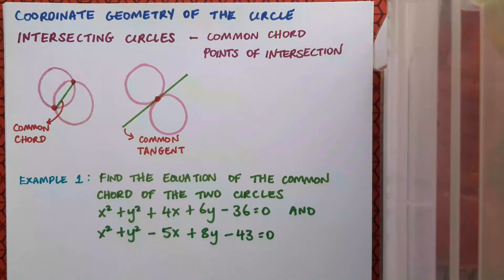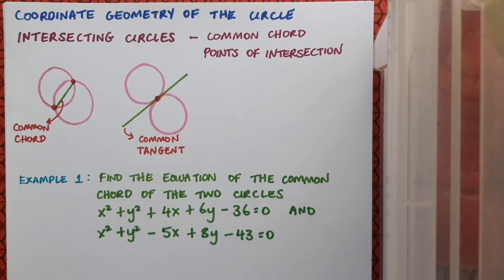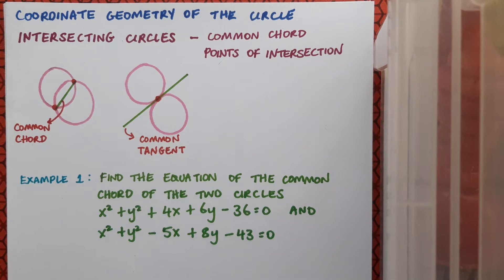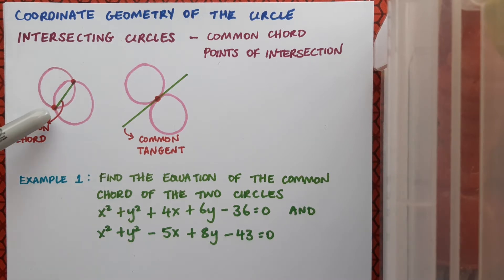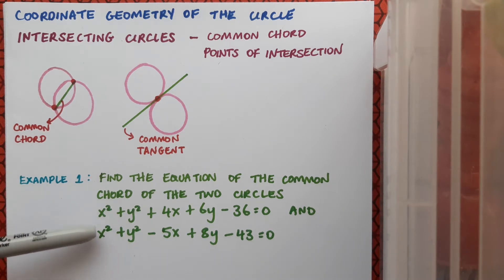Here's an example to start off with. The question asks us to find the equation of the common chord of the two circles x² + y² + 4x + 6y - 36 = 0 and x² + y² - 5x + 8y - 43 = 0. This is actually very easy to do - it's very like a simultaneous equation. I'm basically going to do a simultaneous equation for circles, and because the chord is a line, it's an equation of a line I'm looking for. So I'm going to eliminate the x² and y² terms.